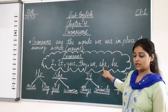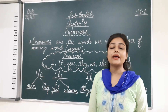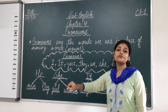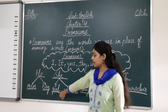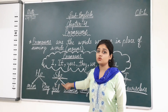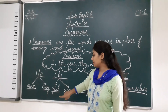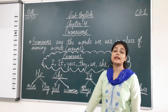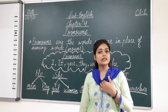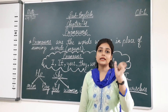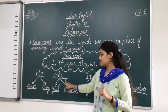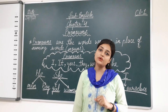Next is 'she'. We use 'she' in place of the name of a girl or woman. For example: She is beautiful.